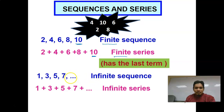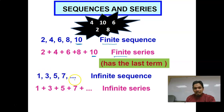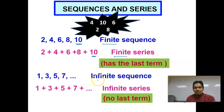Why? Because the symbol of dots — triple dots — shows that it has no end. 1, 3, 5, 7, 9, 11, 13, 15 and so on — endless. So this is what we call an Infinite Sequence and also an Infinite Series, which has no last term.